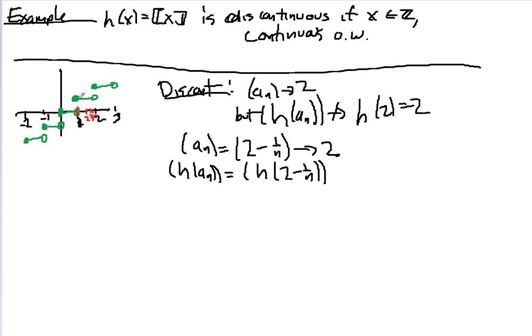If I map that up to the function, 1 is going to map up here. This is h of a sub 1. And that's equal to, that has a value of 1. Similarly, h of a sub 2 is going to be up here. h of a sub 3, it's going to converge to this open dot. But notice h of 2 is up here at 2.